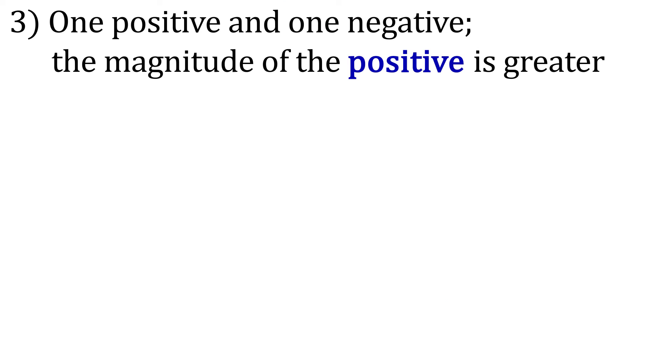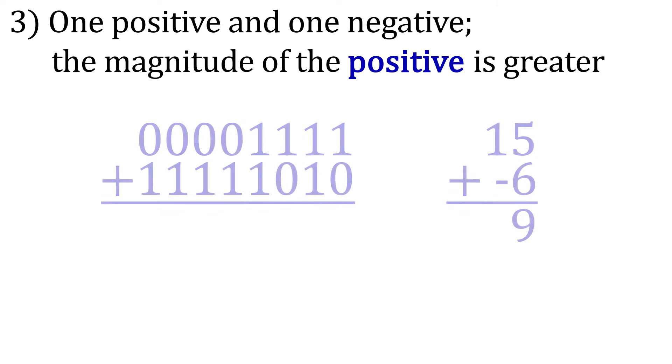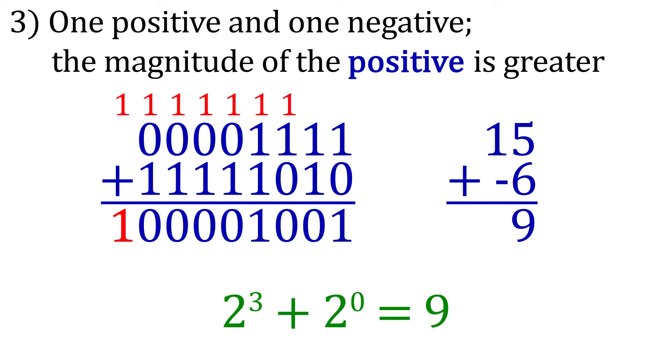Now let's look at one positive and one negative, where the magnitude of the positive is greater. Here we have 15 plus negative 6. When these two numbers are added, the sign bit is positive. This is always the case when adding one positive and one negative, and the magnitude of the positive is greater. It's also impossible to have an overflow condition here.